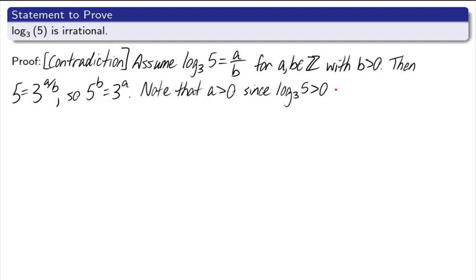Note that a is greater than 0, since log base 3 of 5 is greater than 0. So, a is greater than or equal to 1, and that means 3 to the a is greater than or equal to 3. What am I getting at? 3 to the a is an integer, and it's at least 3. That means that 3 divides 5 to the b. Thus, 3 divides 5 to the b, and now we can use the same argument that we did in the square root of 2 proof. I've got a prime number dividing 5 to a power. So, 3 divides 5. Yeah, that's not true. That would be a contradiction right there. 3 definitely does not divide 5. There's our contradiction.